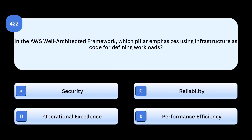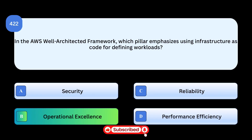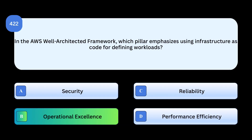Correct answer: Operational Excellence. The Operational Excellence pillar encourages infrastructure as code for repeatability, automation, and consistency. Why others are incorrect: Security focuses on protecting data and workloads. Reliability focuses on availability and fault tolerance. Performance Efficiency optimizes resources, not code-driven infrastructure.